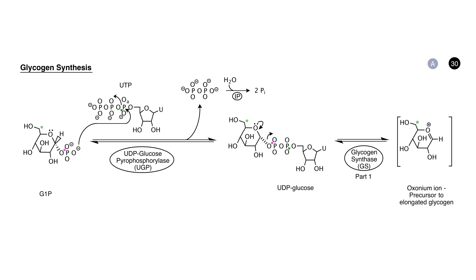The UDP-glucose is the substrate for the next enzyme in the sequence, glycogen synthase. I'm going to divide the glycogen synthase reaction into two parts. In the first, we see cleavage of the bond between the one carbon of the glucose and the beta-phosphate of the UDP. This reaction liberates the UDP and generates the oxonium ion shown in the brackets. Structurally, this oxonium ion is the same intermediate we saw in glycogen breakdown, but here we're using it as a biosynthetic reagent.